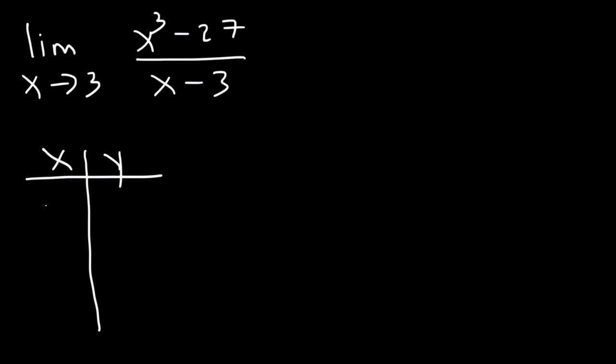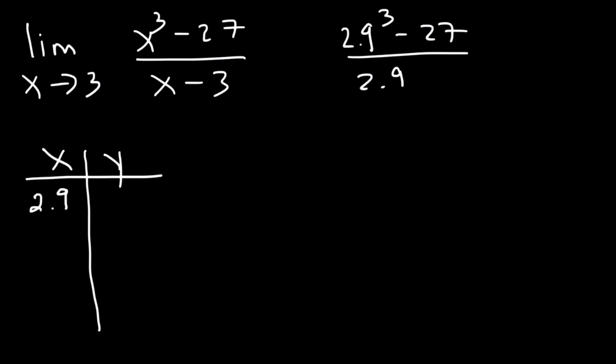Let's start with 2.9: 2.9 to the 3rd power minus 27 divided by 2.9 minus 3. When you type this in, feel free to use parentheses if you're not getting the expected answer. This will give you 26.11.